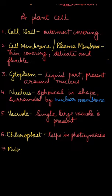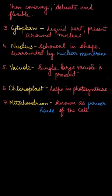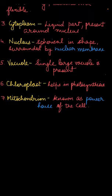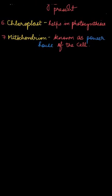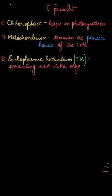Next, we have mitochondria. Mitochondria produces energy and is also known as the powerhouse of the cell. Next, we have endoplasmic reticulum, which is a sprawling net-like organelle. Its function is to make necessary changes in proteins produced by ribosomes and send them to the golgi bodies.